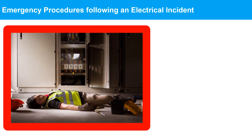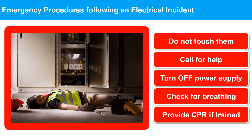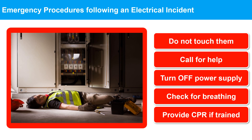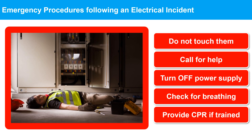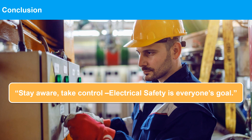Emergency procedures following an electrical incident: If, in spite of all available control measures being in place, an electrical incident occurs in the workplace, all workers should be aware of the proper method for dealing with an electric shock casualty. In conclusion, electrical safety is of utmost importance, and it is essential to follow safe work practices and procedures to prevent accidents and injuries. By being aware of electrical hazards and taking necessary precautions, we can ensure a safe working environment for everyone. Stay aware, take control — electrical safety is everyone's goal.